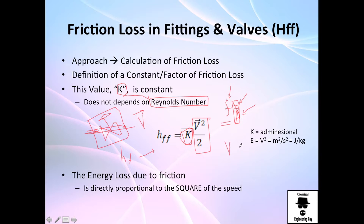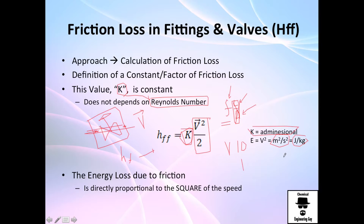Even if you have a high speed of maybe 10 m/s or a low speed of 1 m/s, you will still use the same value of K. K is dimensionless, so velocity squared (m²/s²) divided by 2 gives units of joules per kilogram. Also note that friction loss is proportional to velocity squared — more speed means more friction loss.